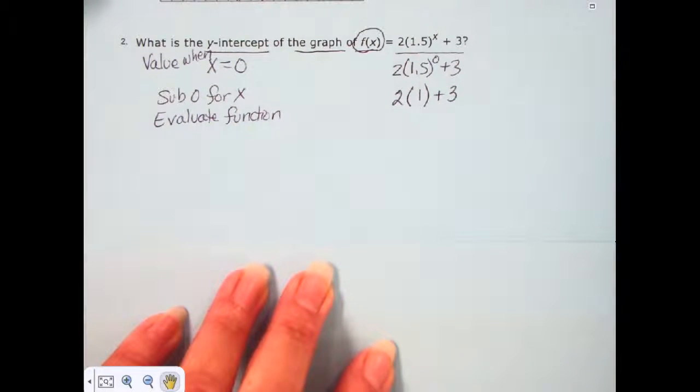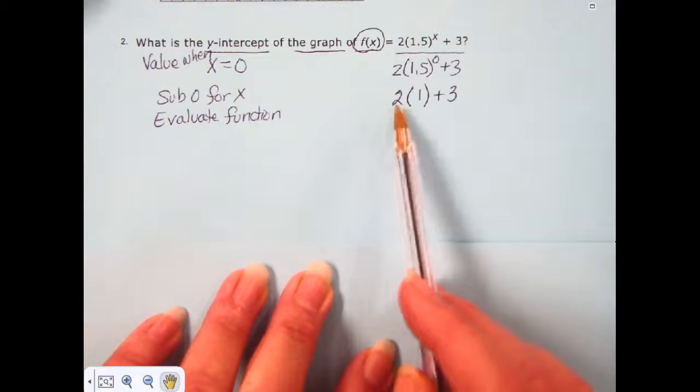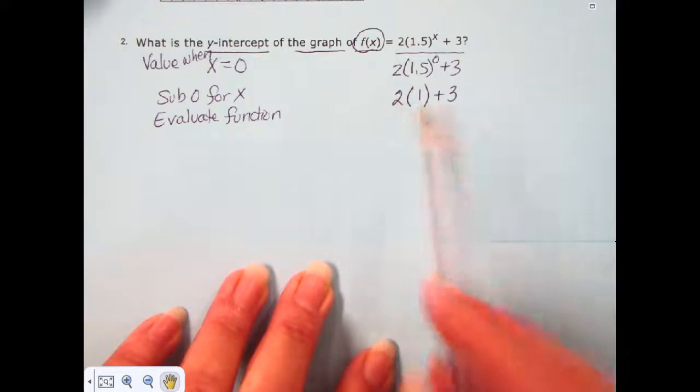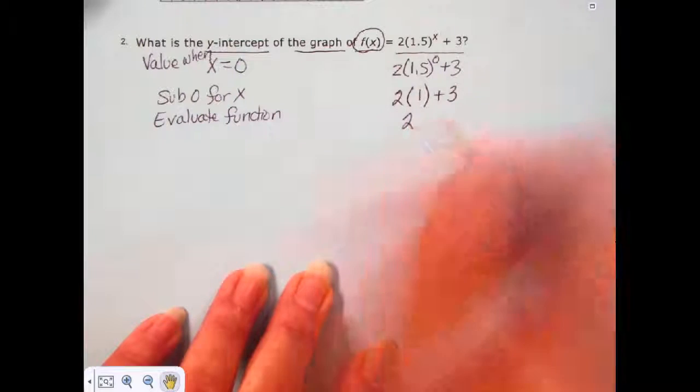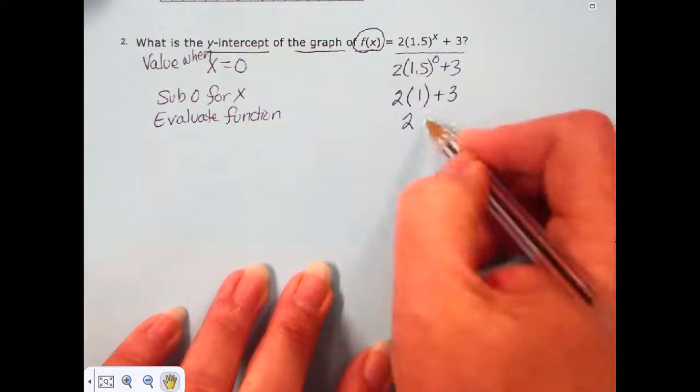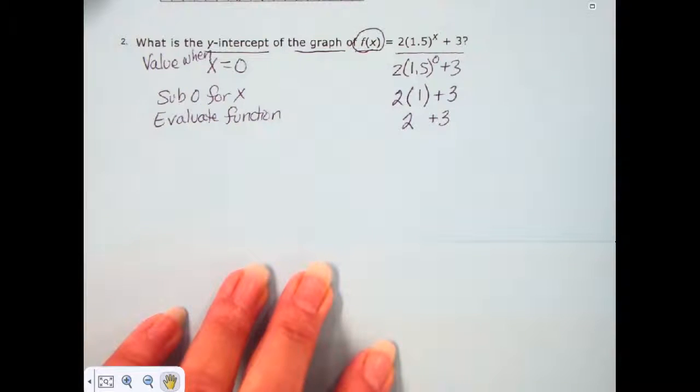The next step in evaluating an expression is to multiply. After you've taken care of the exponents, you multiply or divide in the order that you see it in the problem. We have multiplication here with 2 times 1, and 2 times 1 is 2. We bring down the plus 3 that hasn't been handled yet.